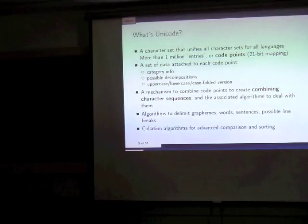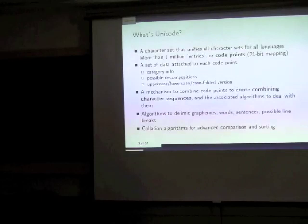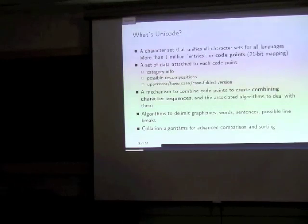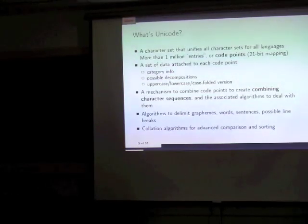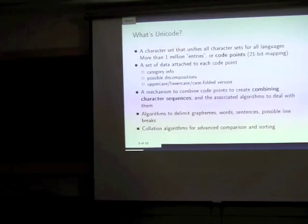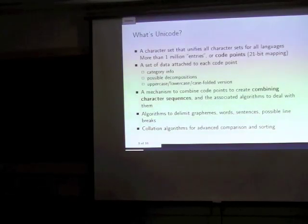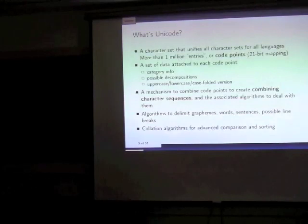What the character set contains is called code points — each entry in the set. Each code point has all the information associated with it: what kind of character it is, whether it's a letter or number, and its properties. It can also be decomposed. For example, there's a character which is ¼, and you can decompose it into 1/4 as one of its decomposition values.